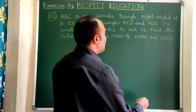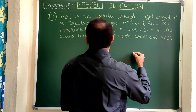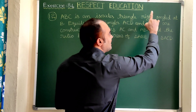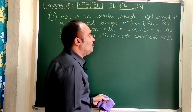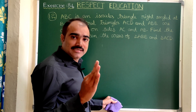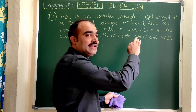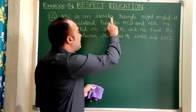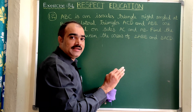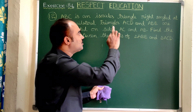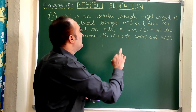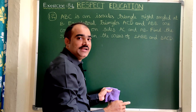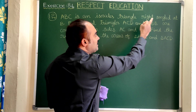So here let us draw the suitable diagram. According to the given question, ABC is an isosceles and right angled triangle. As you know, a triangle has three sides. An isosceles triangle is one in which two of the sides are equal. Here, both the isosceles and right angled conditions should be satisfied.